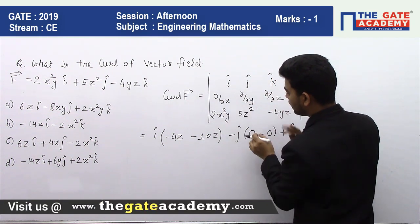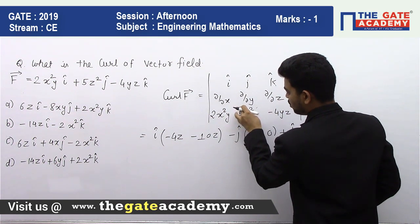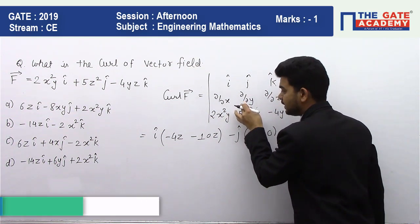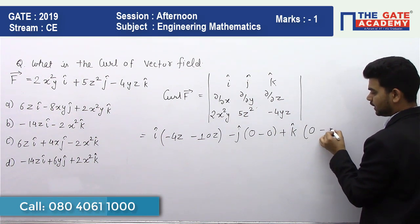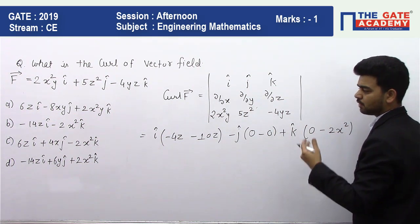If we differentiate this element with respect to x, we will get zero, and here we will get -2x². So here we got our solution.